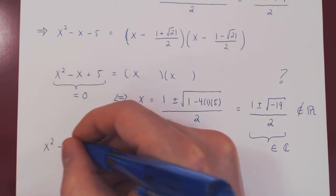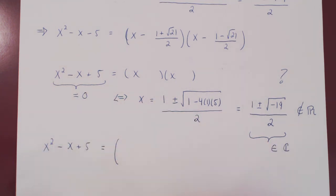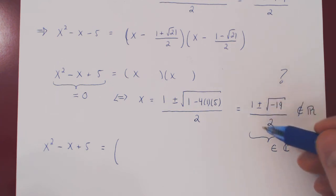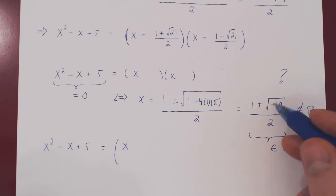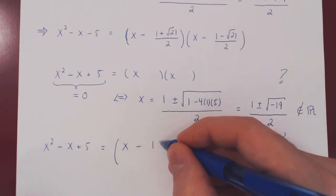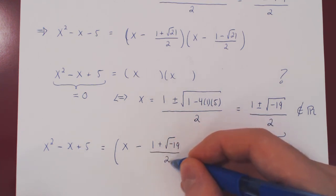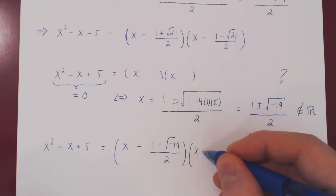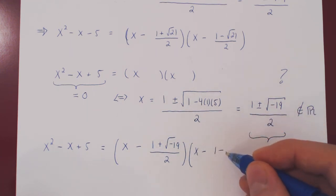And so, x squared minus x plus 5 cannot be factored over the real numbers, but if we allow numbers to be complex numbers, it does factor just as before. So, x minus the first root, which we can take with the plus, so minus 1 plus the root of negative 19 over 2, times x minus the second zero. Now, with the negative, 1 minus the root of negative 19 over 2.